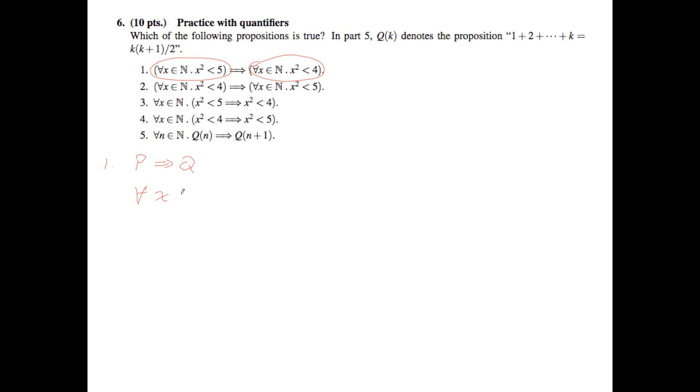So here we want to know for all X in N, is it true that X squared is less than 5? Well, for example, X equals 7. 7 is a natural number. Then X squared is 49, which is not less than 5. Therefore P is false, which means that P implies Q is true vacuously.